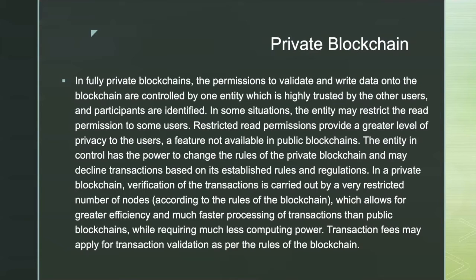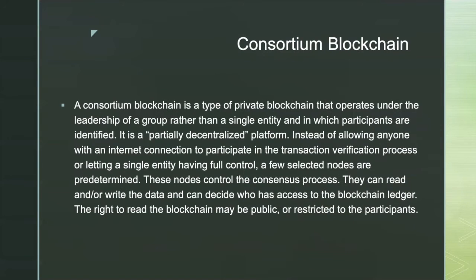In a private blockchain, verification of transactions is carried out by a very restricted number of nodes, which allows for greater efficiency and much faster transaction processing than public blockchains while requiring much less computing power. Transaction fees may apply as per the rules of the blockchain. A consortium blockchain is a type of private blockchain that operates under the leadership of a group rather than a single entity, and in which participants are identified. It is a partially decentralized platform where a few selected nodes are predetermined to control the consensus process — they can read or write data and decide who has access to the blockchain ledger.